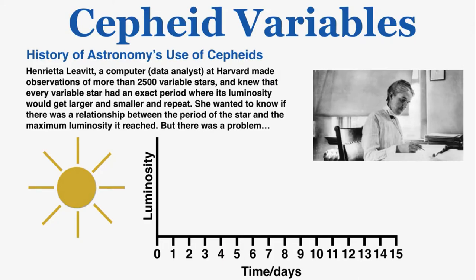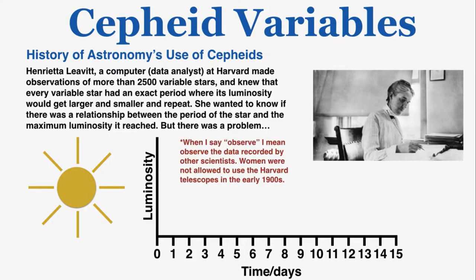Henrietta Leavitt was a computer — which at the time meant a data analyst at Harvard — who made observations of more than 2,500 variable stars. Importantly, she made these observations by analyzing data recorded by other scientists, because women were not allowed to use the Harvard telescopes in the early 1900s, meaning she made this groundbreaking discovery without ever using a telescope herself.